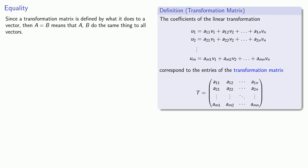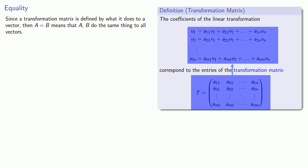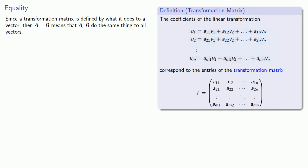So let's start with equality. Since the transformation matrix is defined by what it does to a vector, then A equals B means that A and B have to do the same thing to all vectors. If we consider the transformation matrix and what it actually does, this means that the only way we can have A equal to B is that all of the individual components of A must be the same as the individual components of B. In other words, we have to have component-wise equality.